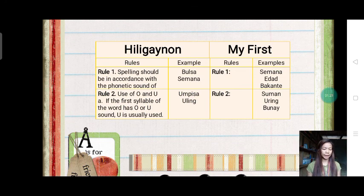For example, we use phonetic sound to make the word easy and ma-iintindihan. We use the i, a, and a sound for these words para maklaro na naiintindihan niya.